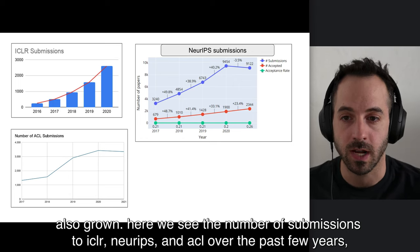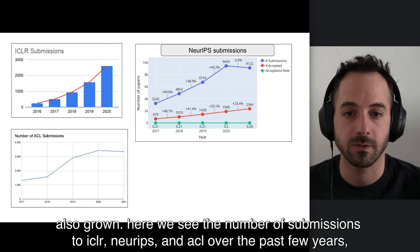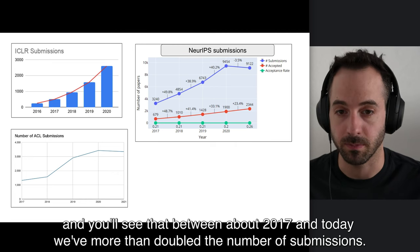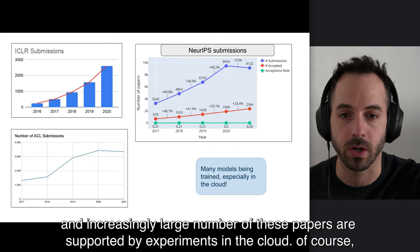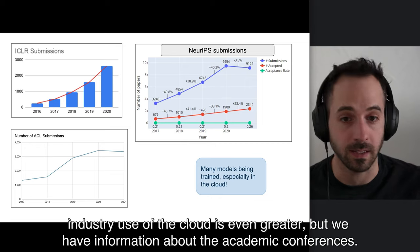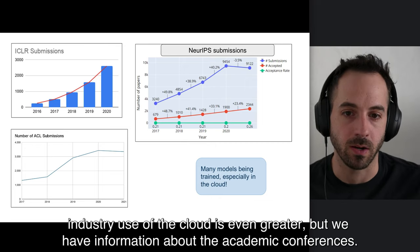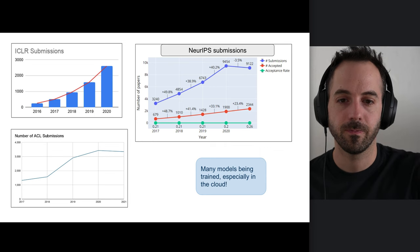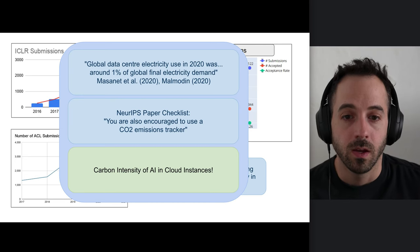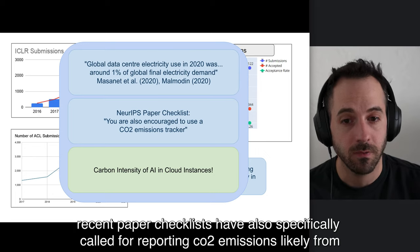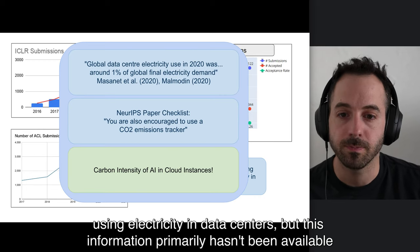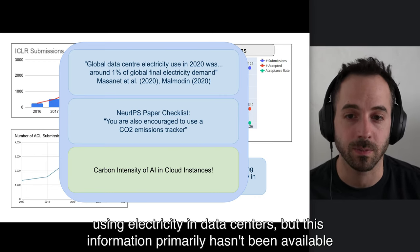Here, we see the number of submissions to ICLR, NeurIPS, and ACL over the past few years, and you'll see that between about 2017 and today, we've more than doubled the number of submissions. An increasingly large number of these papers are supported by experiments in the cloud. According to recent estimates, data centers make up about 1% of global electricity demand. Recent paper checklists have also specifically called for reporting CO2 emissions, likely from using electricity in data centers, but this information primarily hasn't been available to users.